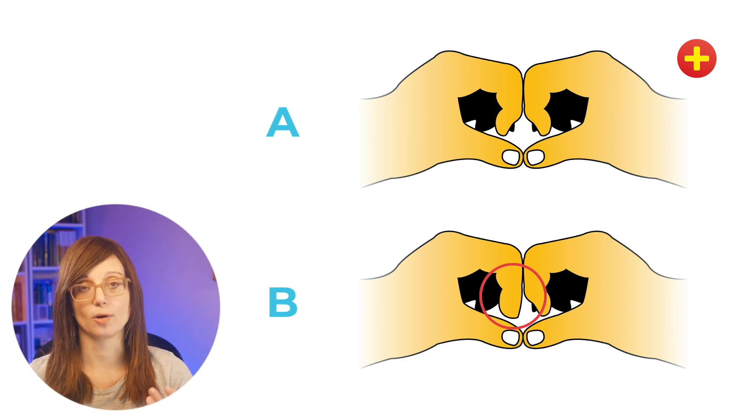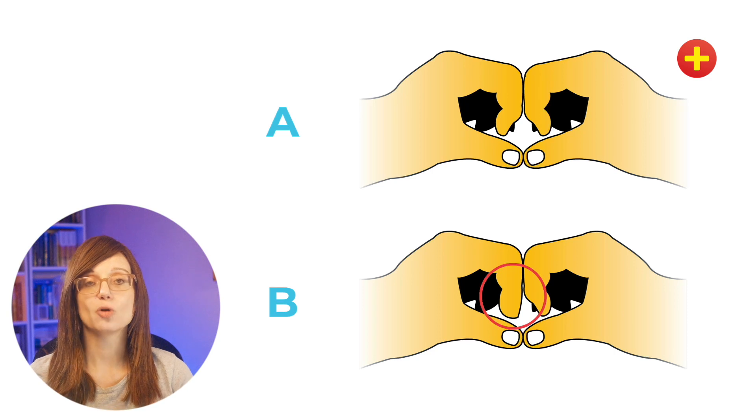In a negative test, a normal test, so the top one, the joints are symmetrically flexed. But in a positive test, where you've got a central slip injury, the injured DIPJ extends more for the reasons we discussed previously.